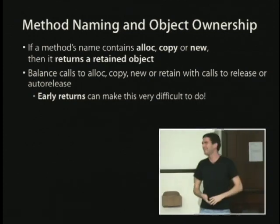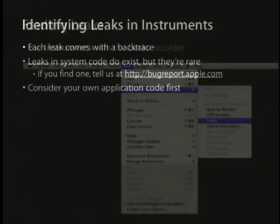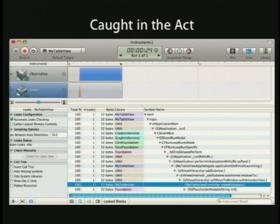There's a great tool called Instruments that's included with Xcode and all the development tools — it's installed by default so you already have it. There's a way to get to it right from Xcode: in the Run menu, there's 'Start with Performance Tool.' To find leaks, obviously we want to start with the Leaks tool. Let's take a look at what this is going to look like.